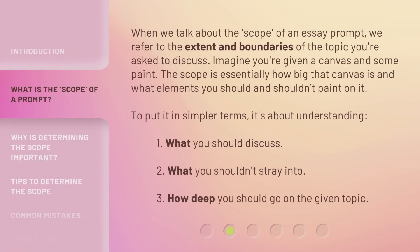When we talk about the scope of an essay prompt, we refer to the extent and boundaries of the topic you're asked to discuss. Imagine you're given a canvas and some paint. The scope is essentially how big that canvas is and what elements you should and shouldn't paint on it. To put it in simpler terms, it's about understanding: 1. What you should discuss. 2. What you shouldn't stray into. 3. How deep you should go on the given topic.